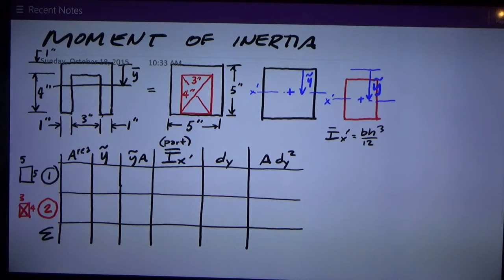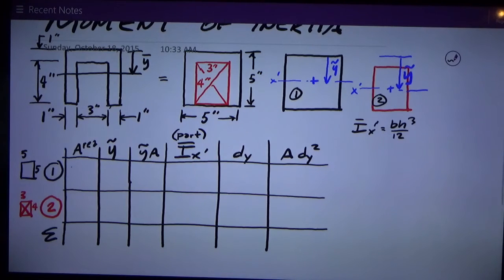I build this chart and I call the sections one and two. This section is called one and the red section's called two. The first column in my chart is the area of the shape, so that is five by five is twenty-five. The area of the negative red shape is three by four, twelve, and it's negative because it's a cutout. I sum that column and I get thirteen.